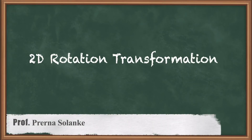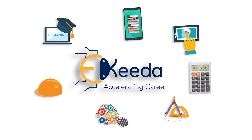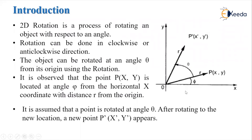Hello students, today we are going to learn about the topic 2D rotation transformation. 2D rotation is a process of rotating an object with respect to an angle. The rotation can be done in clockwise or in anticlockwise direction.